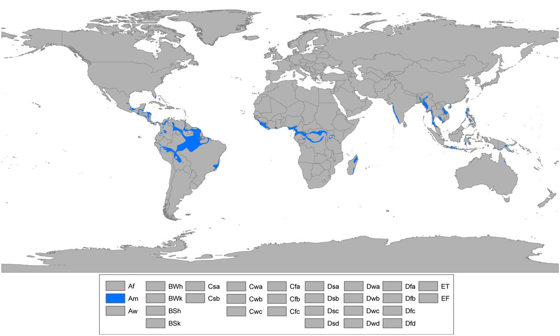A tropical monsoon climate, occasionally known as a tropical wet climate or a tropical monsoon and trade wind littoral climate, is a type of climate that corresponds to the Köppen climate classification category Am.